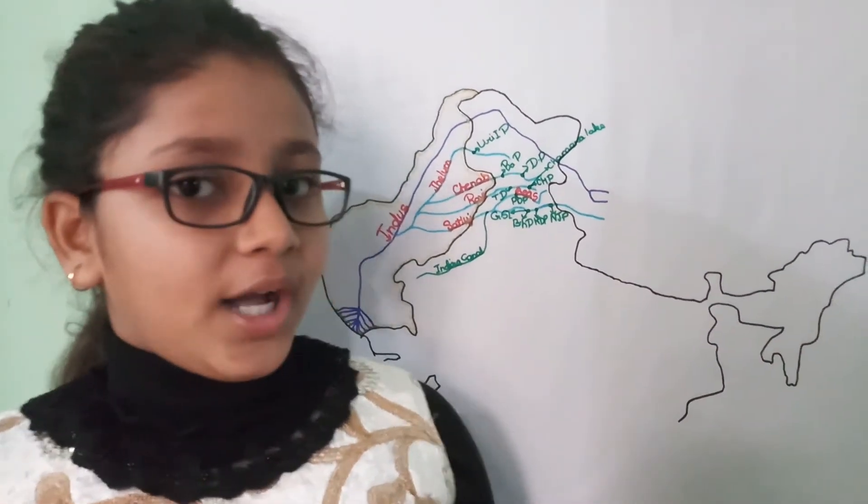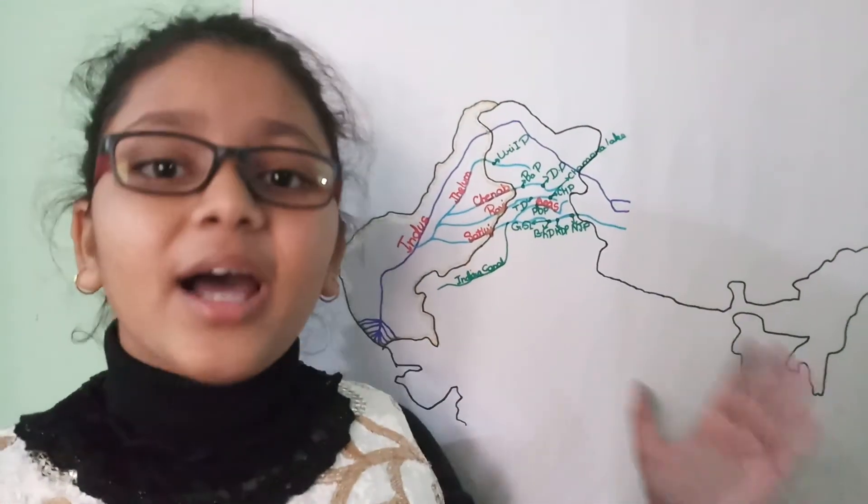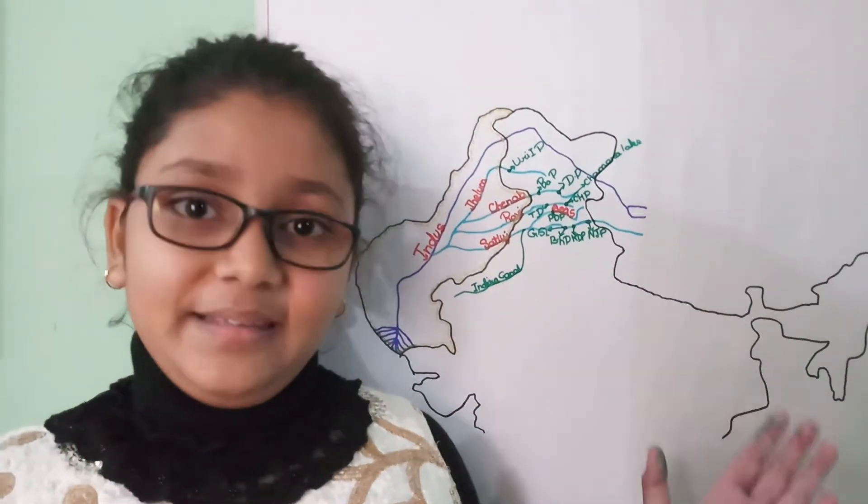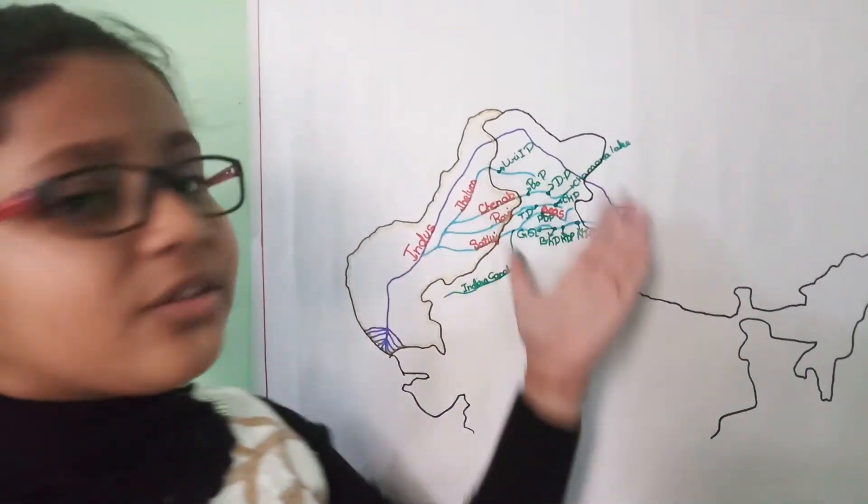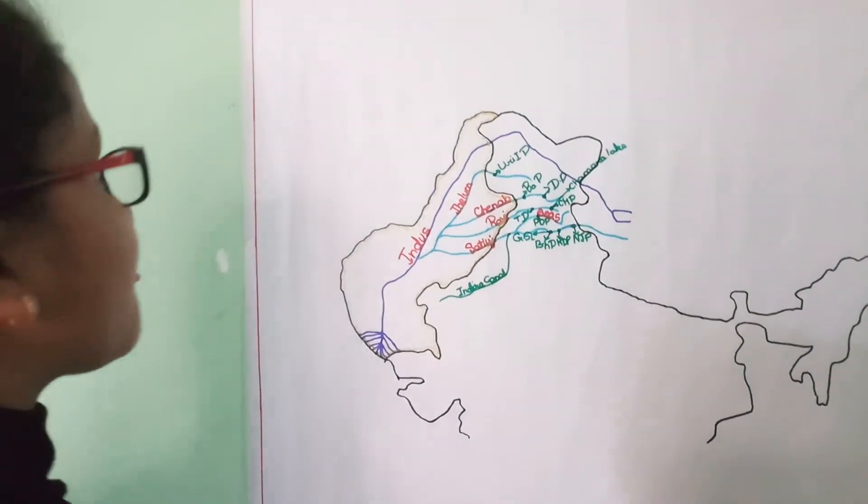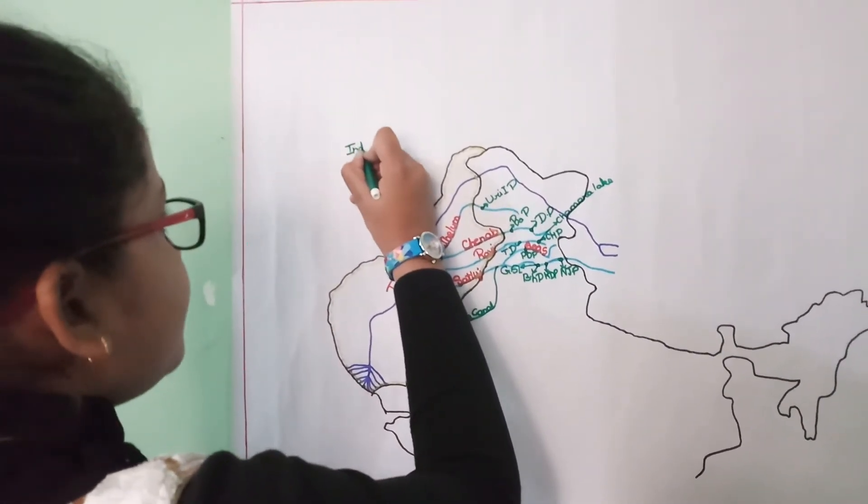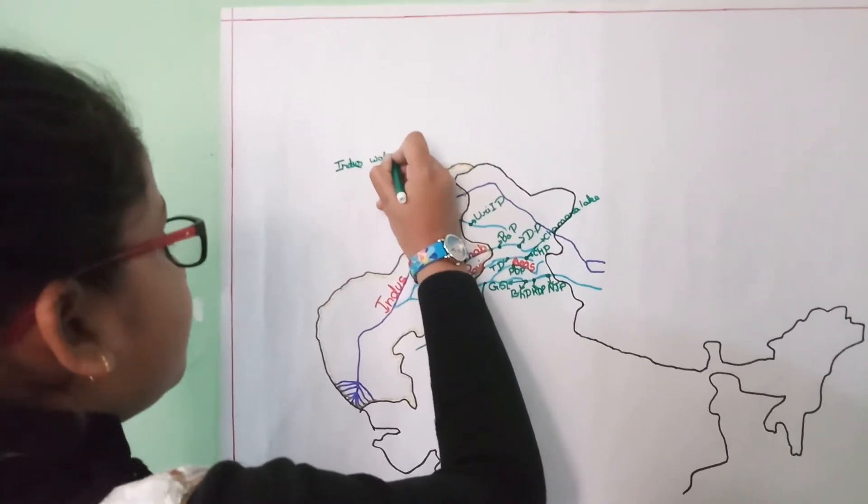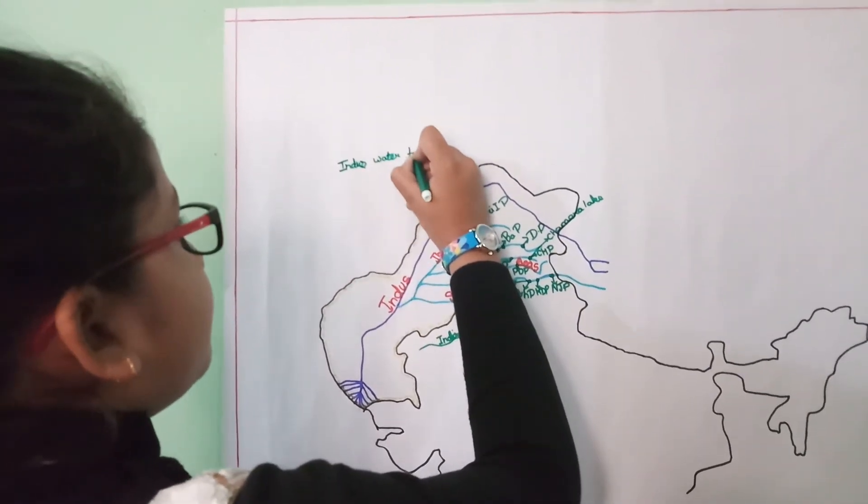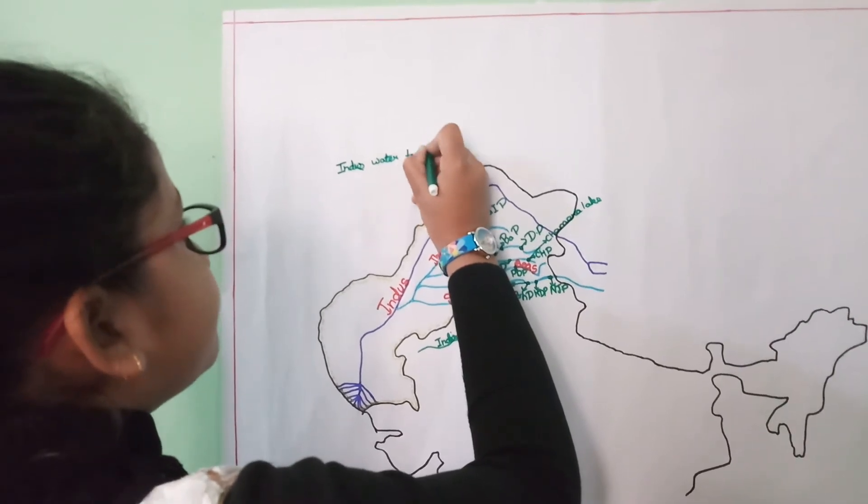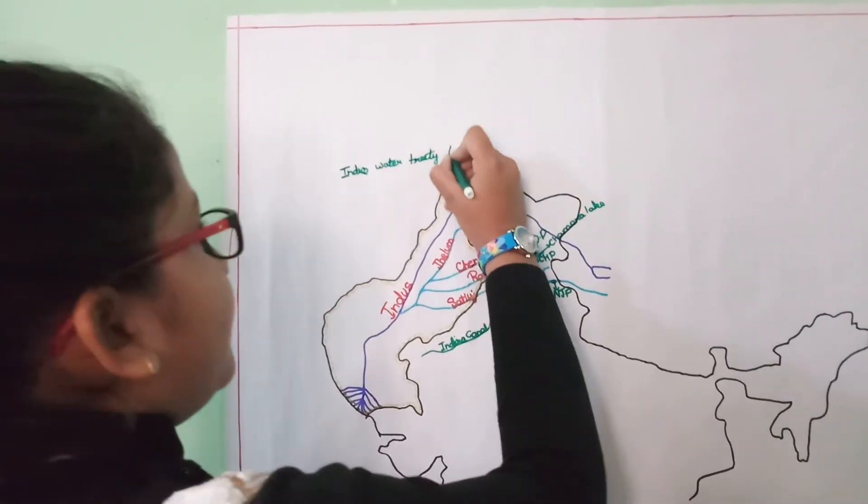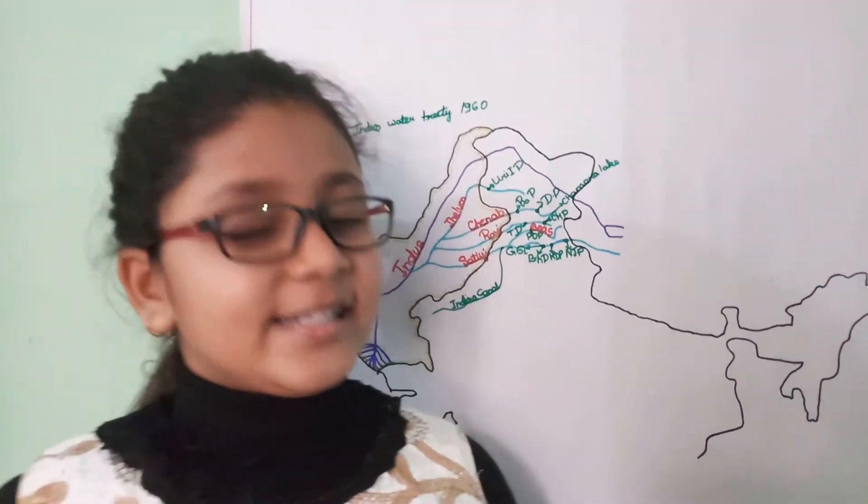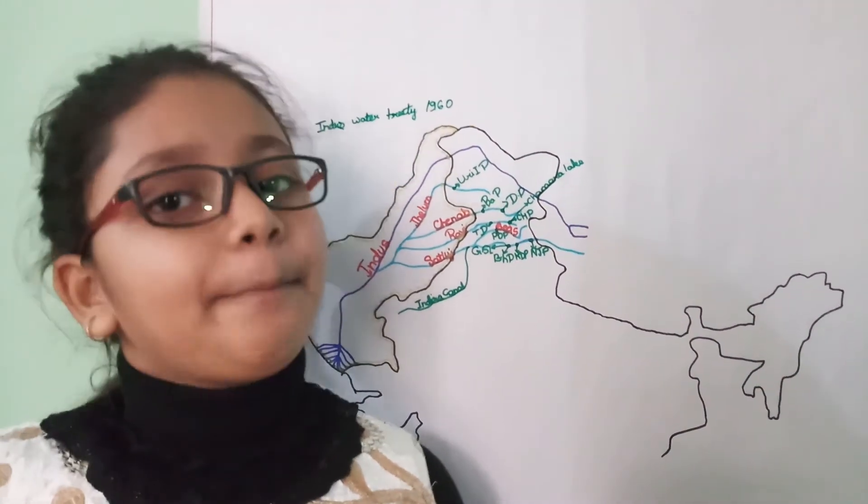So now the multi-purpose river valley projects are constructed on the basis of the Indus Water Treaty. The Indus Water Treaty, 1960, was held between India and Pakistan.